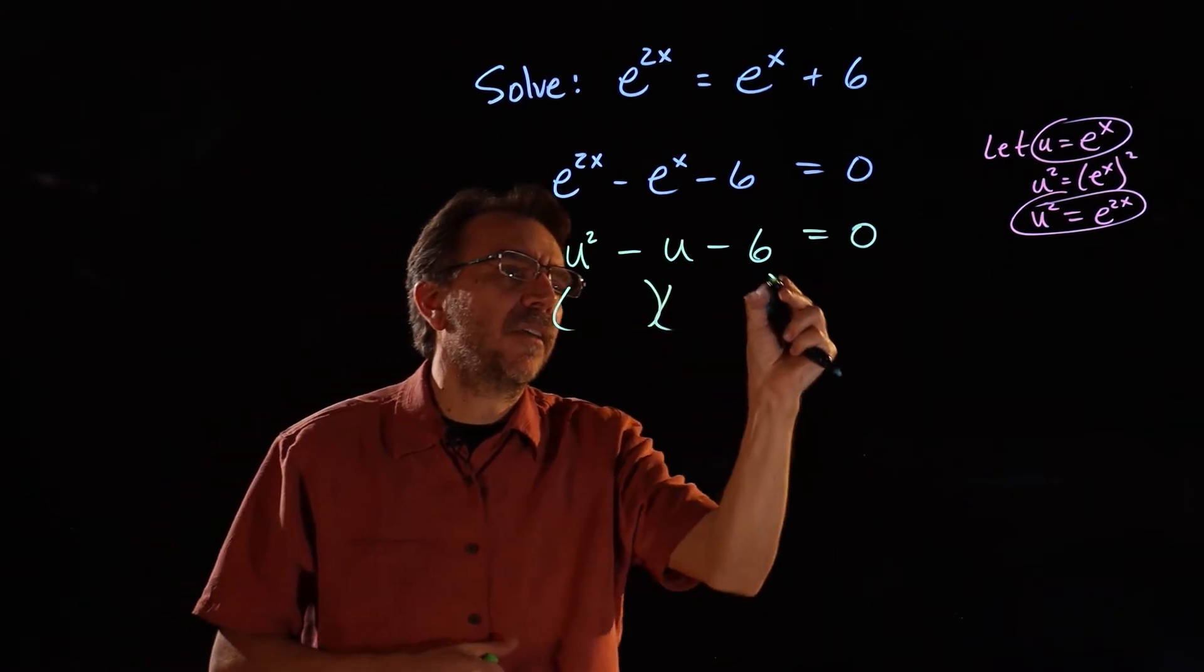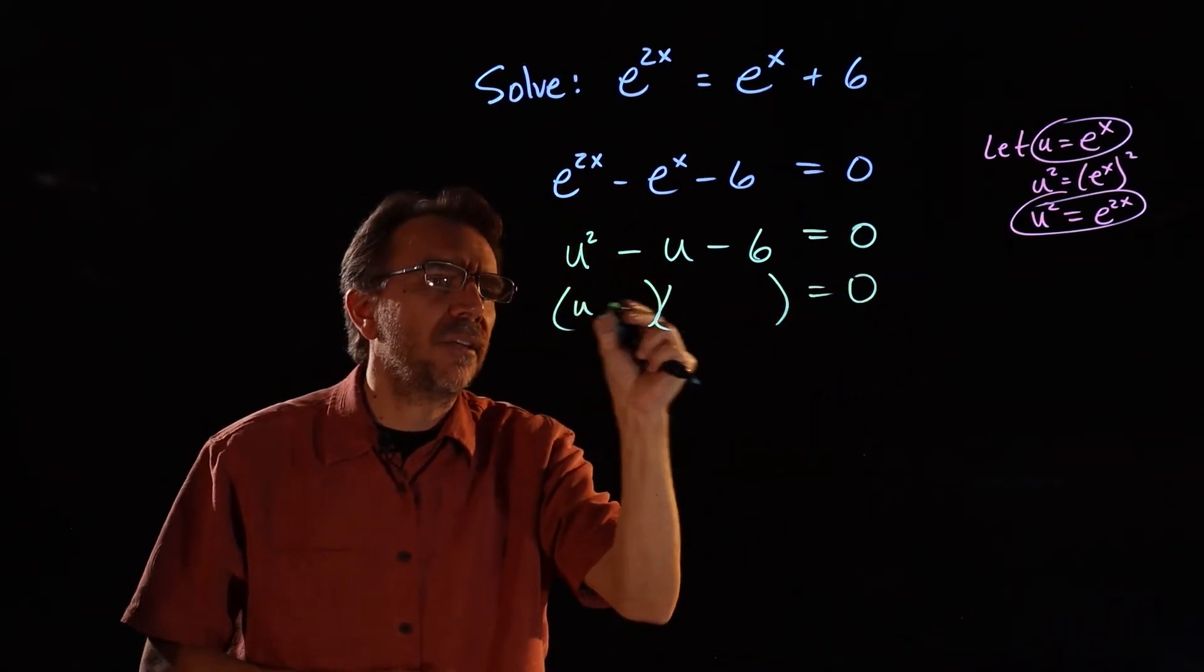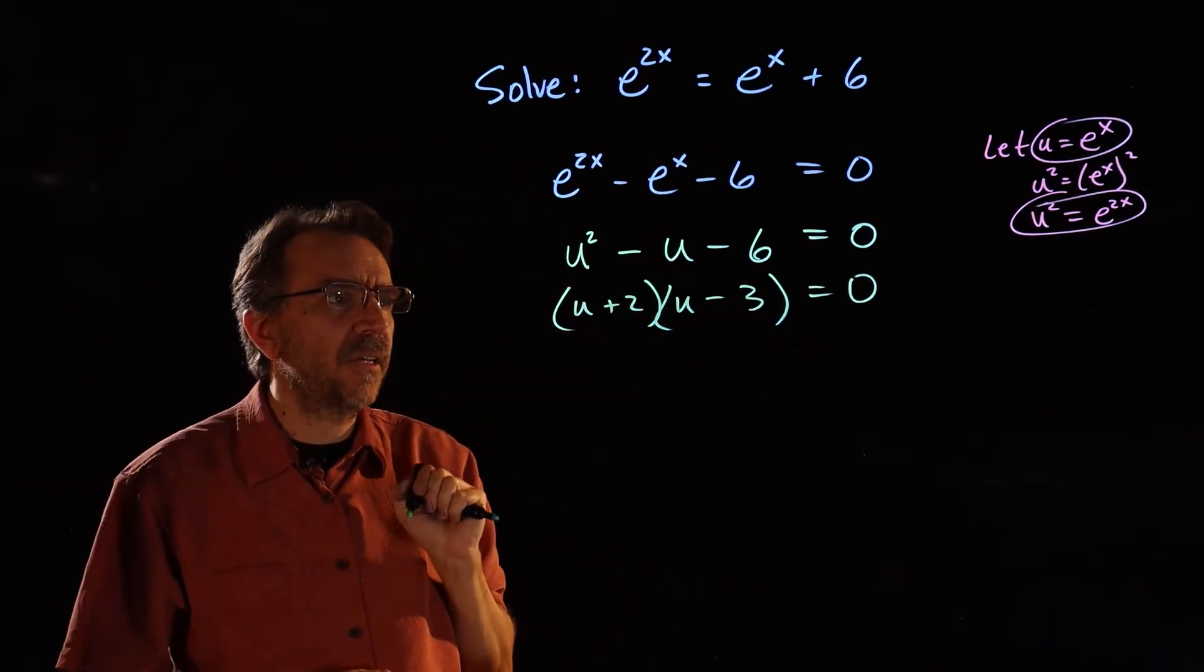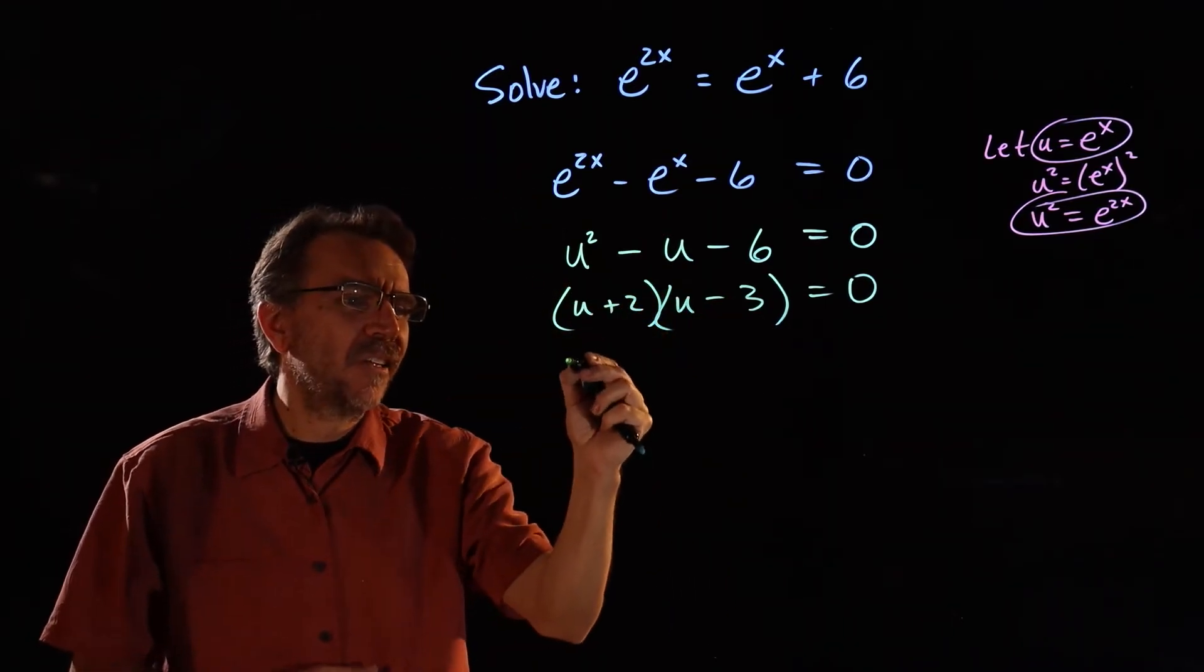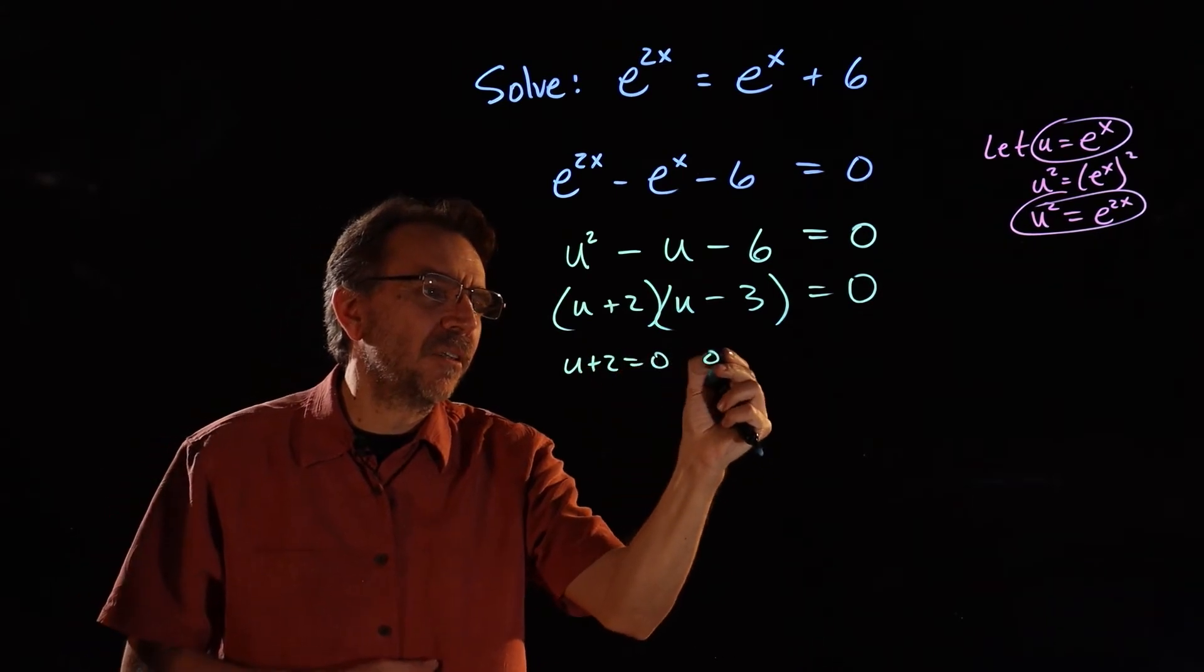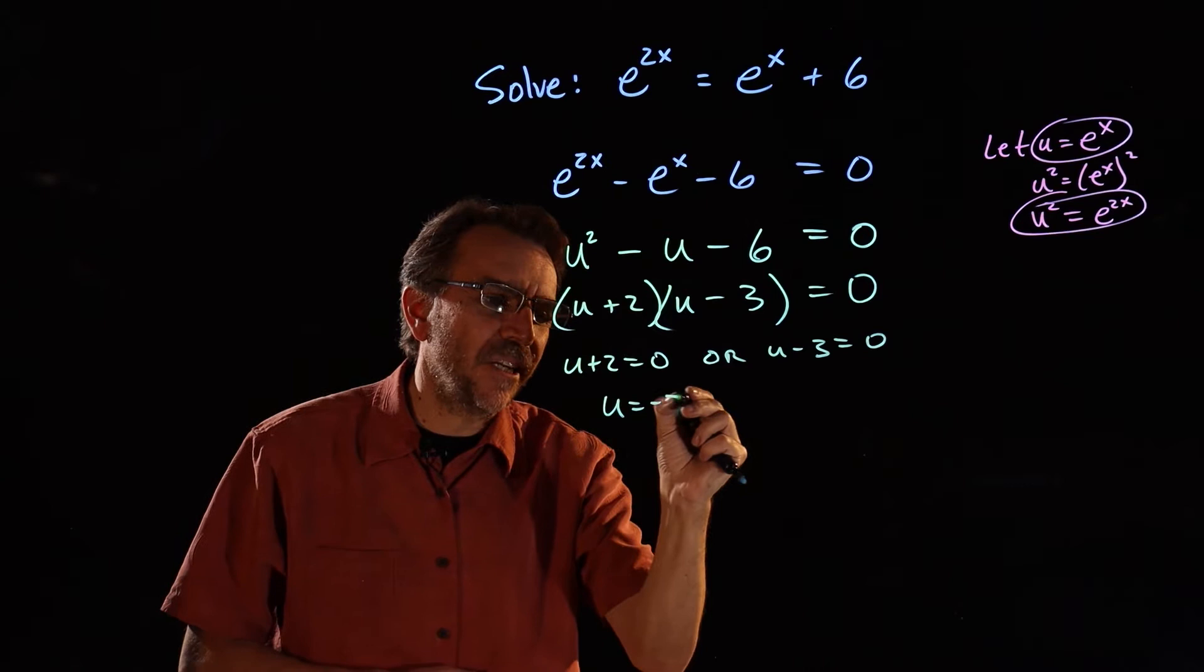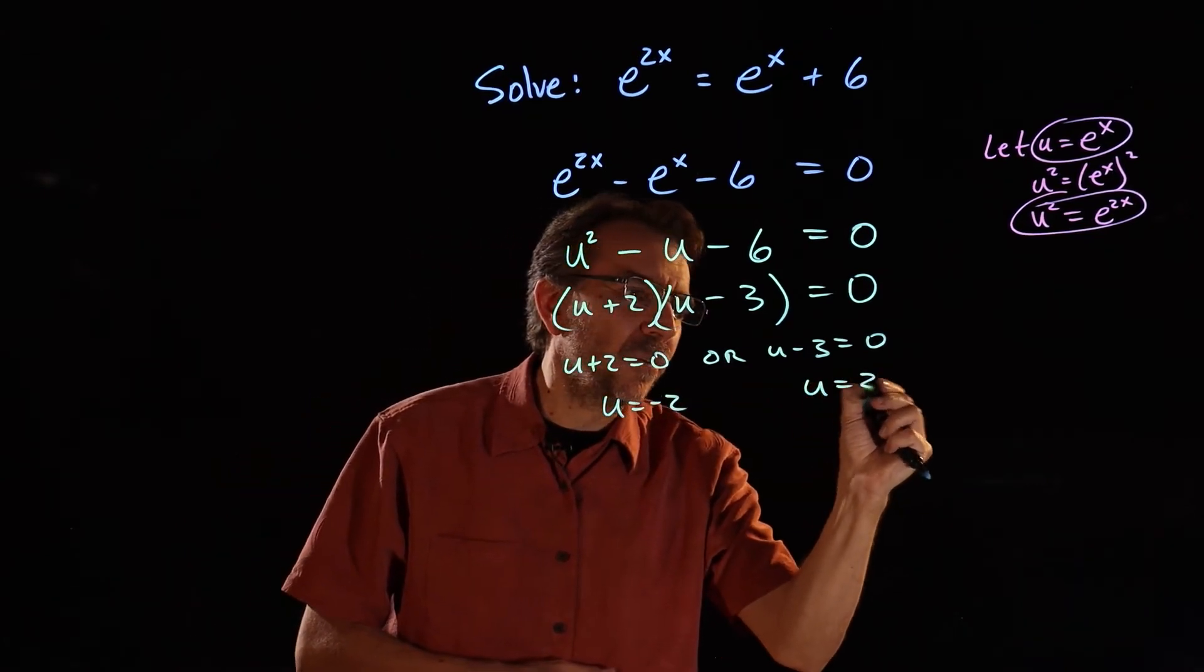This one actually factors, right? u times u, 2 times 3, minus to get the negative 1 and a plus here. Looks good. So u plus 2 equals 0, or u minus 3 equals 0, u equals negative 2, or u equals 3.